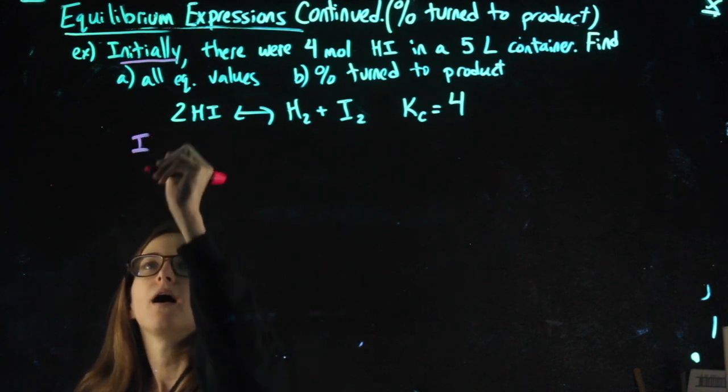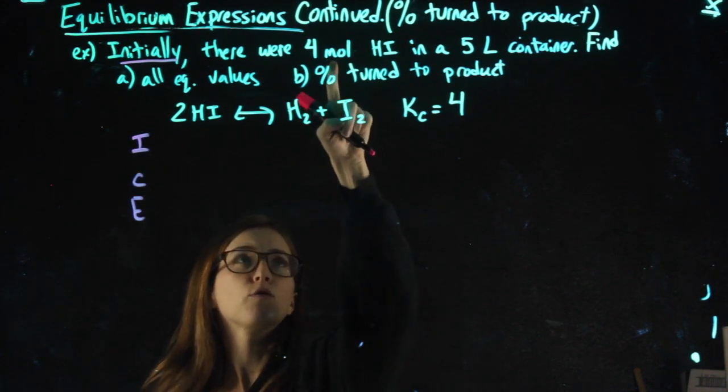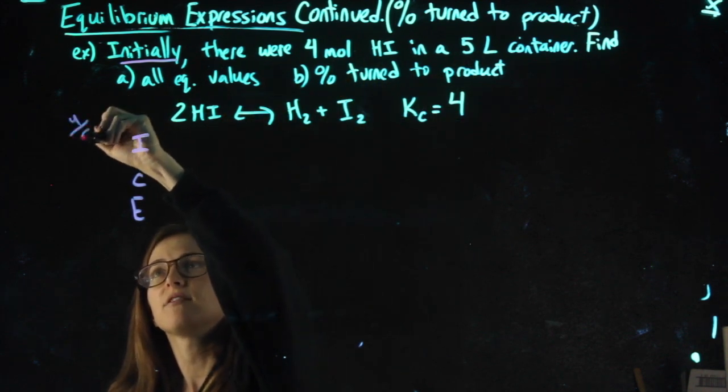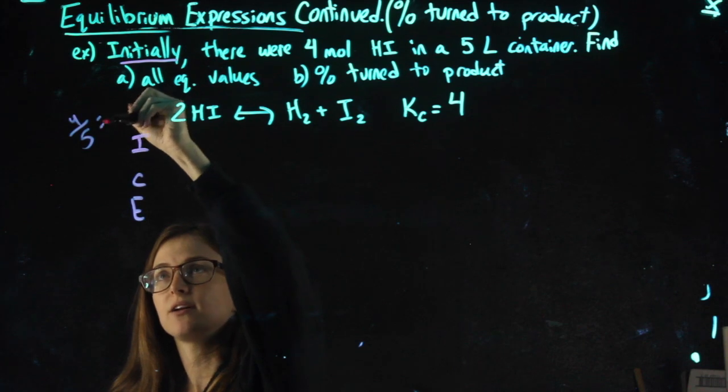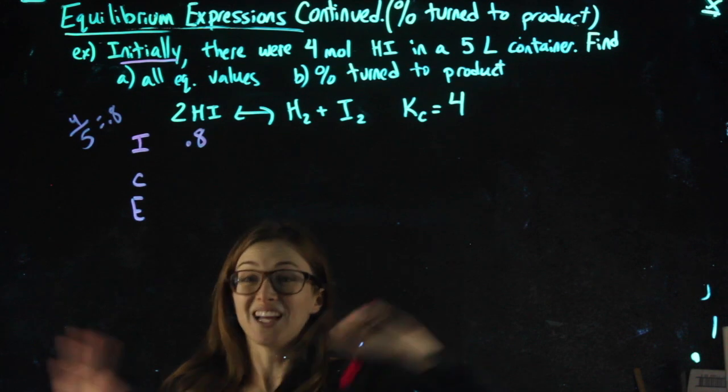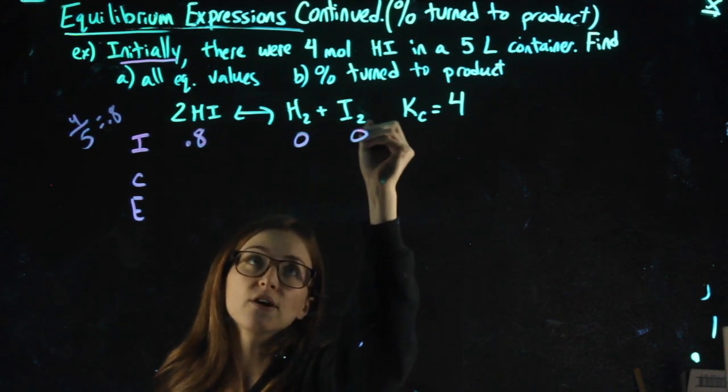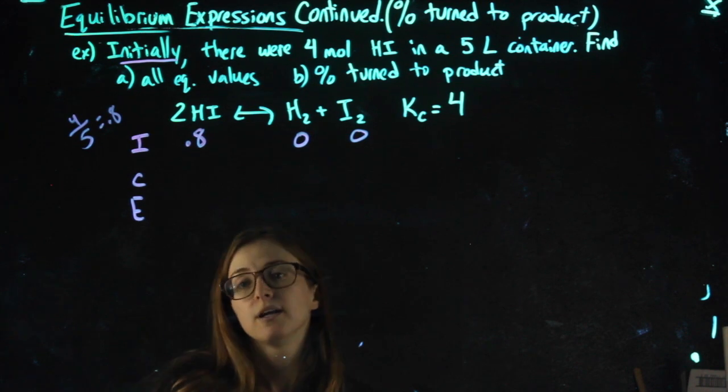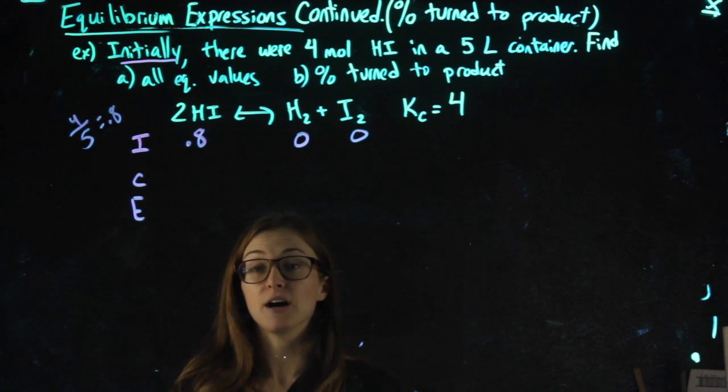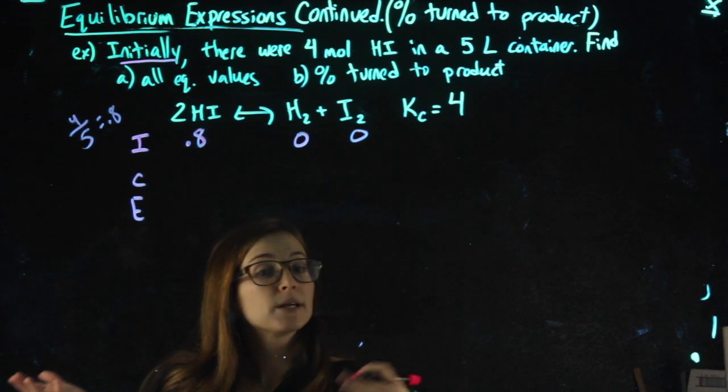So for my ICE chart, four moles of HI in a five liter container—four divided by five to get molarity, moles divided by liters—is 0.8. That's the initial value. That's all it gives me, so this is a situation where I can assume the other initial values are zero if they're not mentioned.